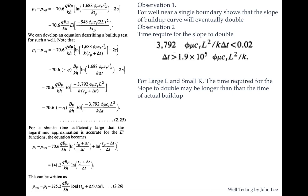If the shut-in time Δt is sufficiently large, the logarithmic approximation is applicable and the Ei function can be replaced by a logarithm — that is, log(1.78x). Replacing the Ei function with the logarithmic function for sufficiently large Δt gives us equation 2.26, which is a simplification of the above equation.